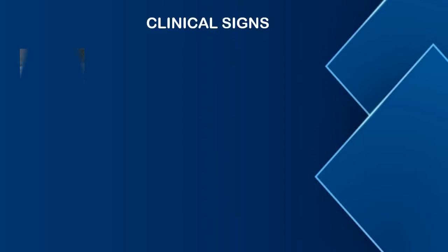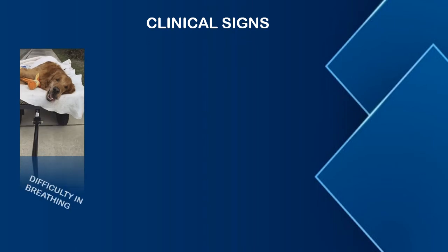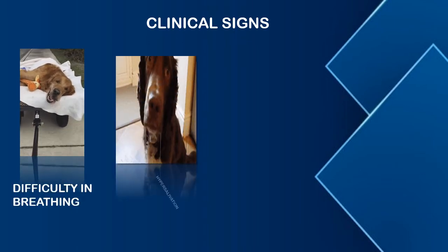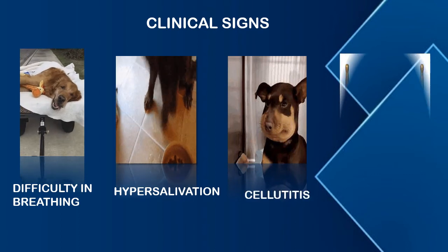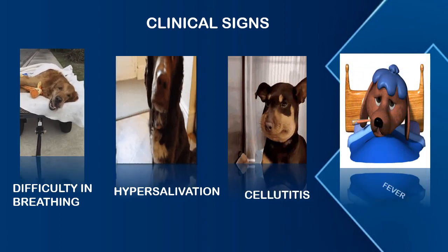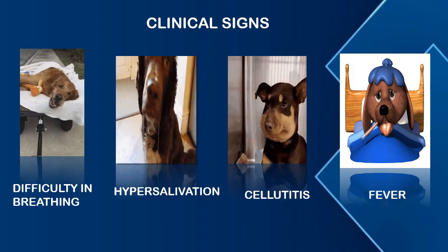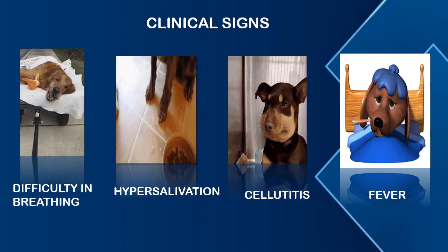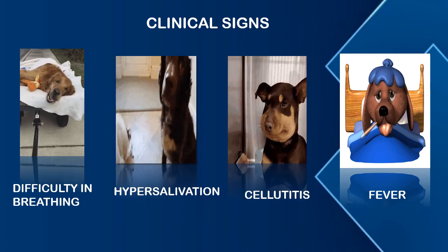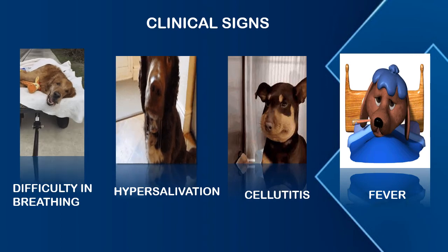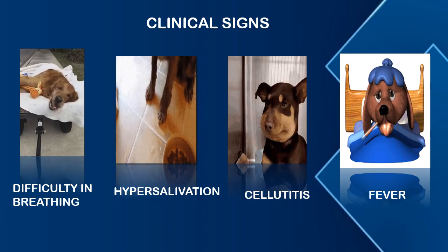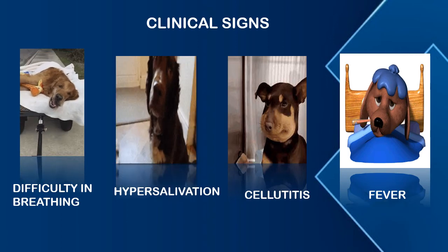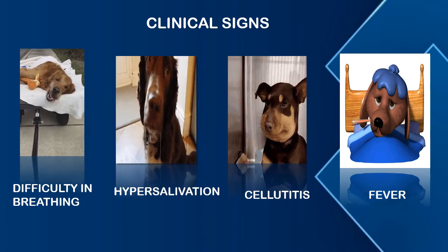Next are symptoms and clinical signs. These are difficulty in breathing, hypersalivation, cellulitis, and fever. But the most important feature is coughing. We can clearly identify the disease as Pasteurellosis because the cough sound is very weird and typical and can easily be recognized from very far away in distance.